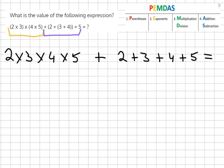Now following PEMDAS, we're going to start off with the multiplication, so 2 times 3 times 4 times 5, and that gives us the answer of 120.